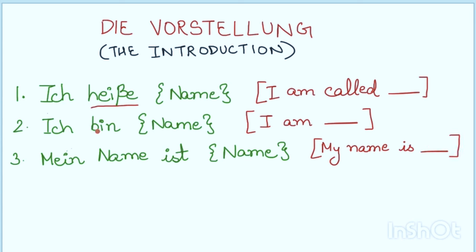So, for example, your name is Anna. So, these sentences will be read as Ich heiße Anna. Ich bin Anna. Mein Name ist Anna.